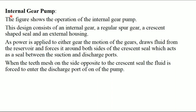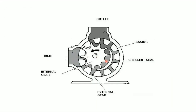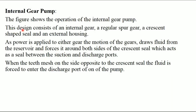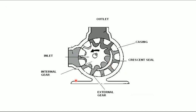Next, we will see the internal gear pump, which comes under the positive displacement pump category. This is the diagram of the internal gear pump. This design consists of an internal gear, a regular spur gear, a crescent-shaped seal, and an external housing. As power is applied to either gear, the motion of the gears draws fluid from the reservoir and forces it around both sides of the crescent seal, which acts as a seal between suction and discharge ports. When the teeth mesh on the side opposite to the crescent seal, the fluid is forced into the discharge port of the pump. This is the construction and working of the internal gear pump.